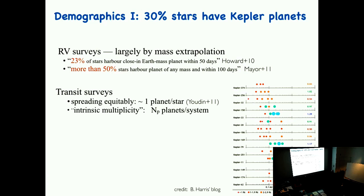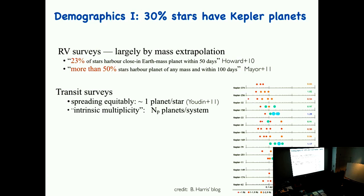First part: demographics. The most important thing you want to know is, given a star, what's the probability of it having a Kepler planet? The number in the end is 30%. The development towards that 30% takes two slides. Once the Kepler satellite found all these transiting planets, all you need to do — as Andrew Youdin showed very early on — is ask how many planets we see, divide by the number of stars we observe, and figure out how many planets per system. You get a nice number: typically about one planet per system in the Milky Way direction.